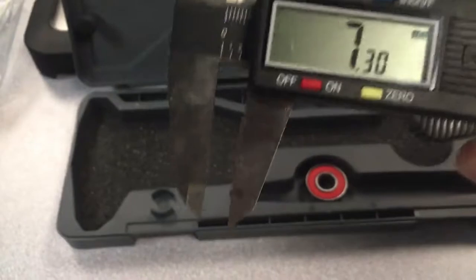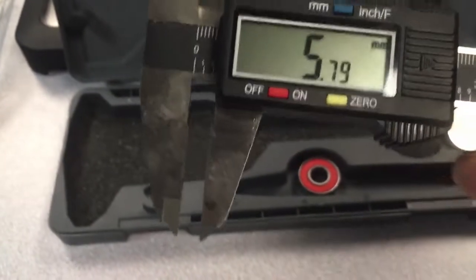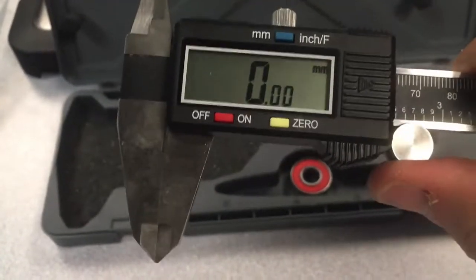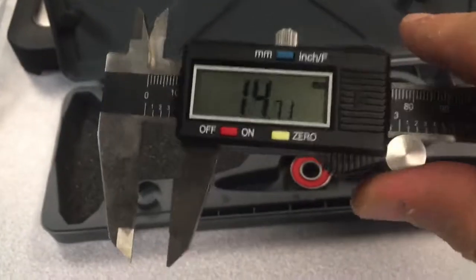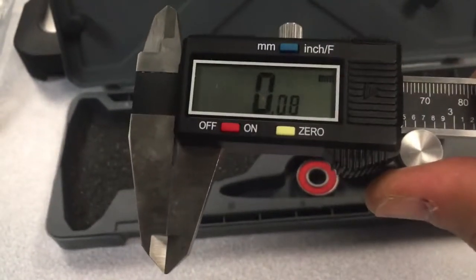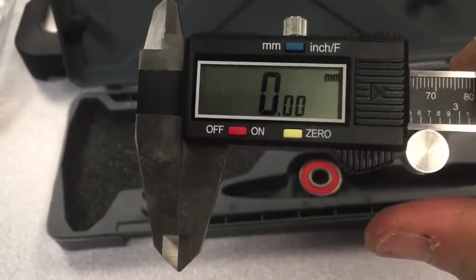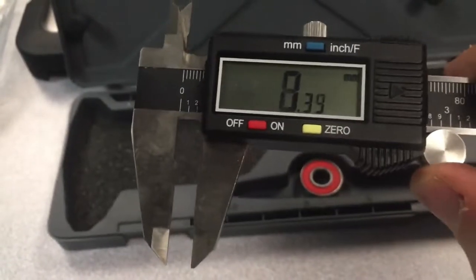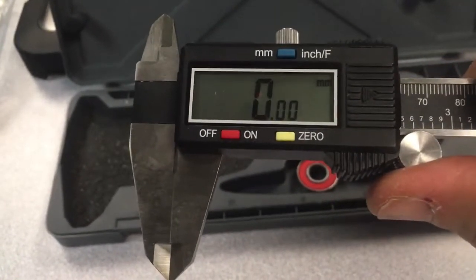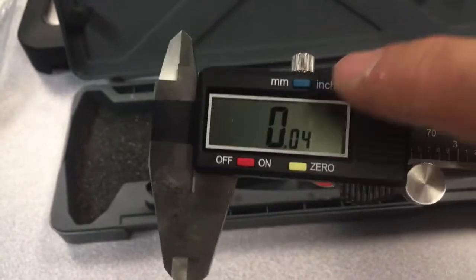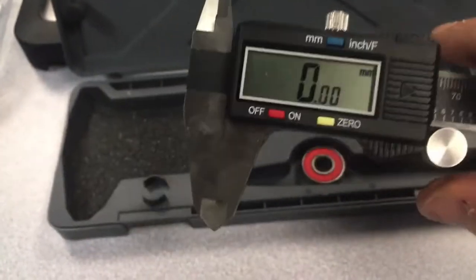Now, I have the jaw closed all the way. To move the jaw, I just spin this little dial here. If it shows zero, great. But sometimes it'll be off a little bit when you close it. There it goes, and it doesn't want to zero. Now hit zero and it zeroes it out.